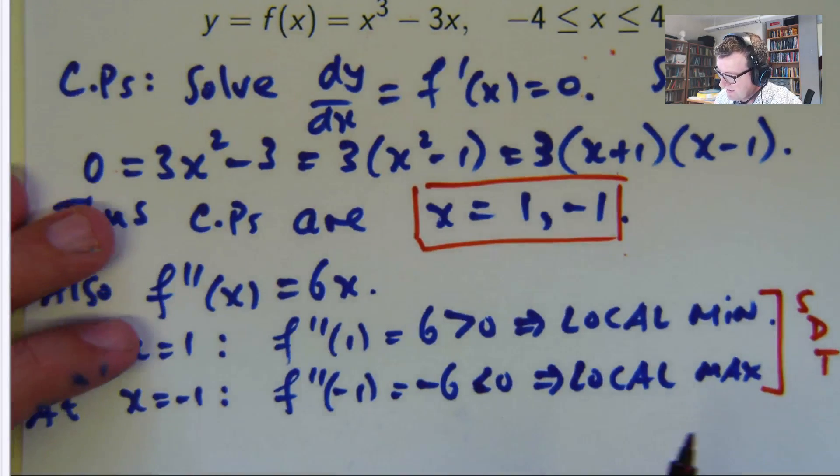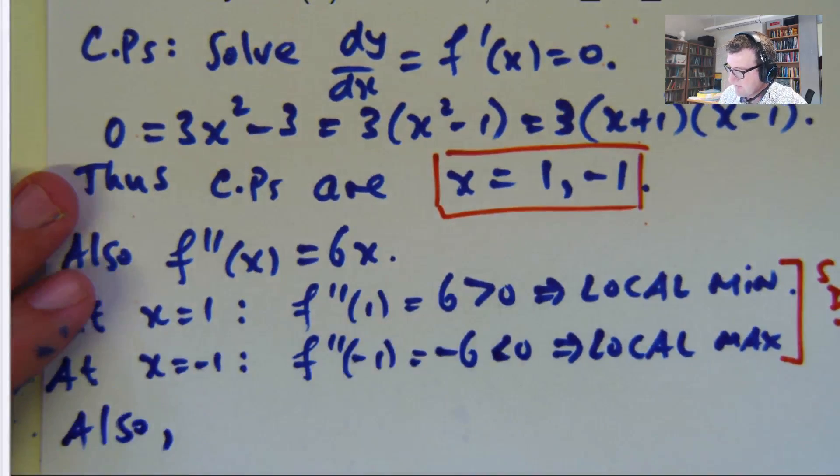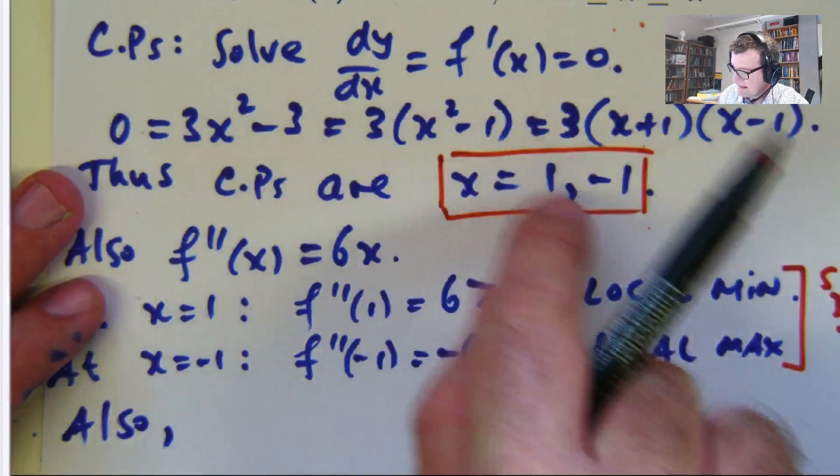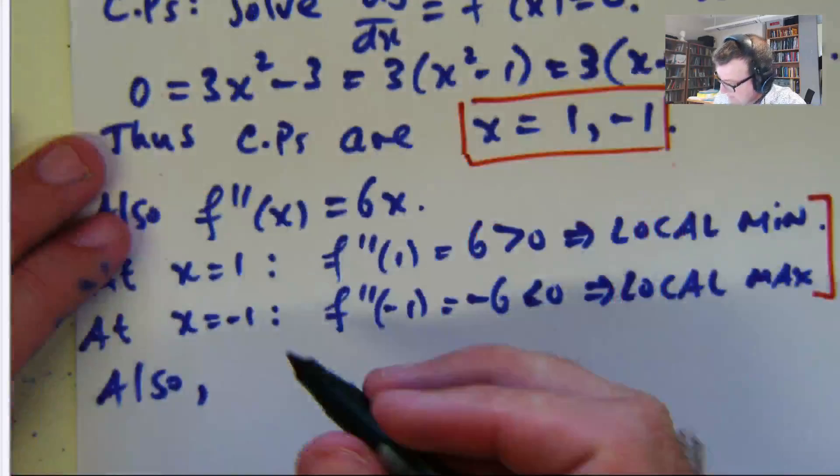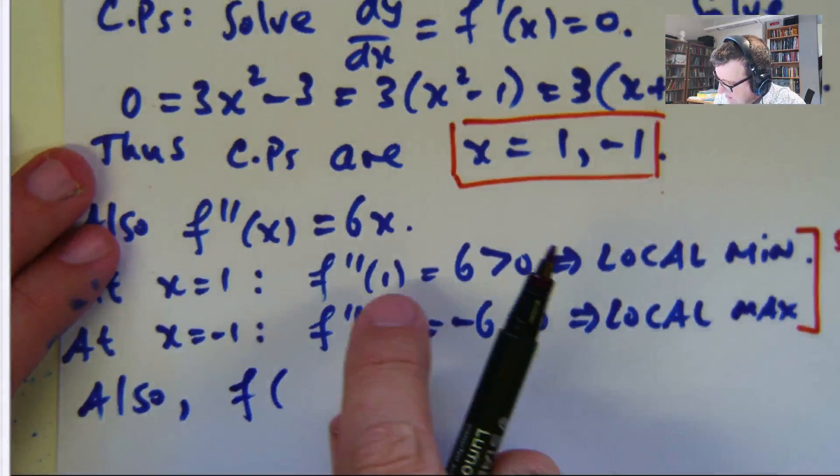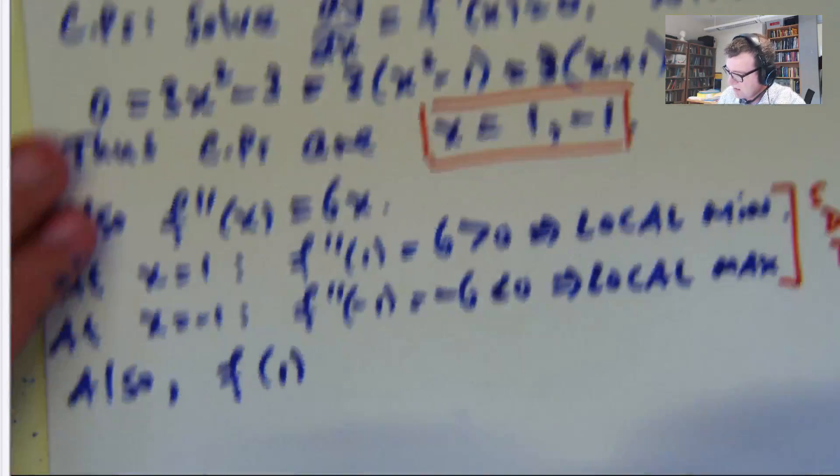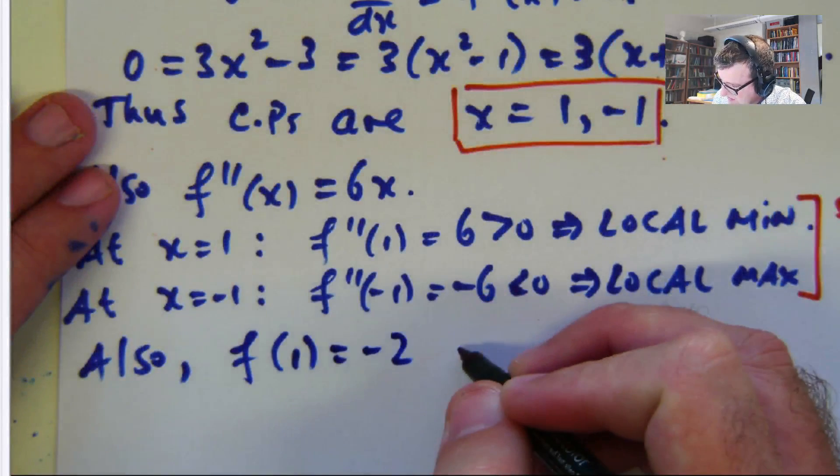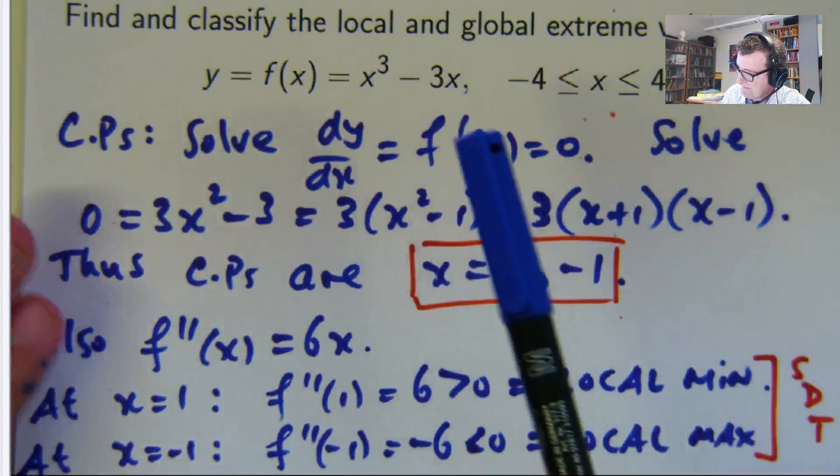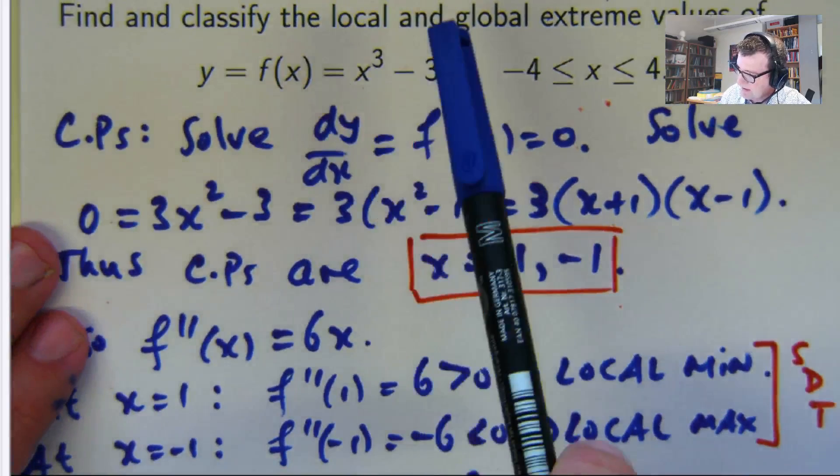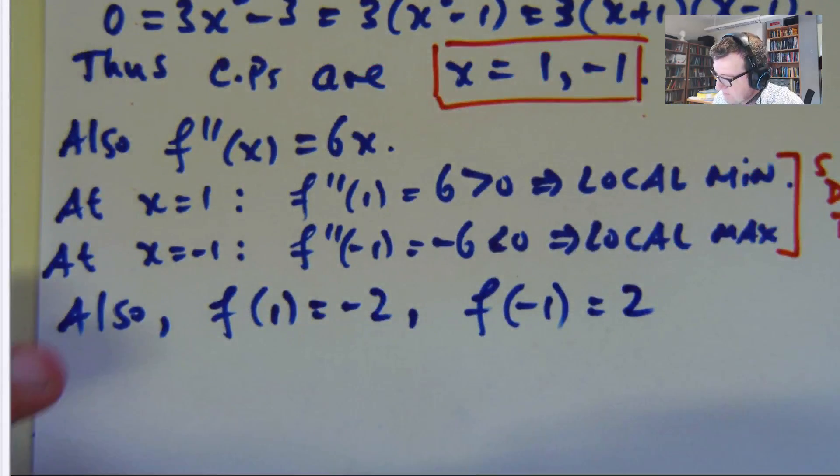So let's actually work out the value of our function at these points. Because we've got to work out the global extreme values as well. So f of 1 is going to be 1 cubed minus 3, which is negative 2. And f of negative 1 equals negative 1 plus 3.